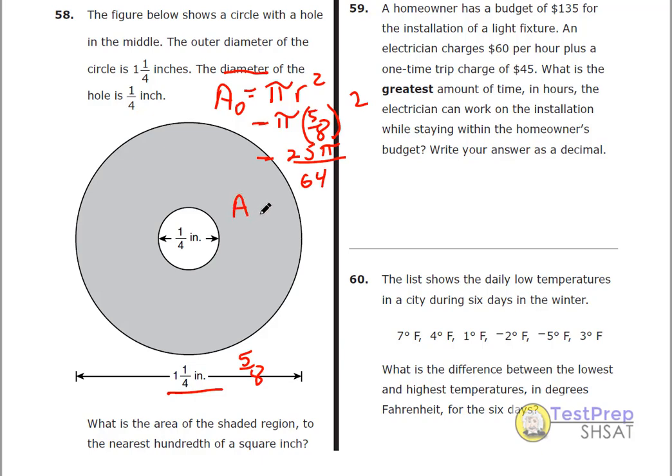We want to subtract the inner area or the inner circle from that. Well, again, the diameter is a quarter, so that means the radius, which is what we want for our area calculation, equals one-eighth. So here, pi r squared is going to be pi over eight squared, which is 64.